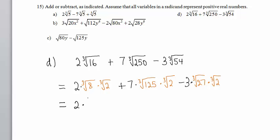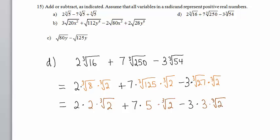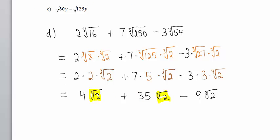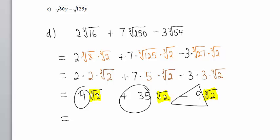We have 2 times 2 times the cube root of 2, plus 7 times — the cube root of 125 is 5 — times the cube root of 2, minus 3 times — the cube root of 27 is 3 — times the cube root of 2. This gives us 4 times the cube root of 2 plus 35 cube root of 2 minus 9 cube root of 2. We have like terms. 4 plus 35 is 39, take away 9 is 30. So our answer is 30 cube root of 2.